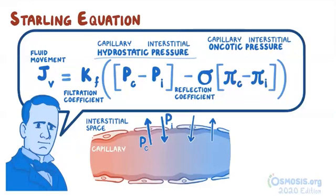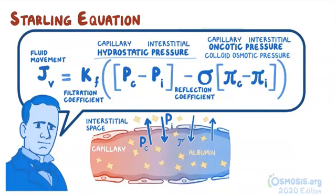Then there are the oncotic pressures, sometimes called colloid osmotic pressures. And it's caused by proteins like albumin, which pulls fluids towards them. Here we have the pi c, or capillary oncotic pressure, which pulls fluids into the capillary. In addition to the pi i, or interstitial oncotic pressure, which pulls fluids into the interstitial space. But since there's usually little protein in the interstitial space, the interstitial oncotic pressure in normal conditions is close to zero.